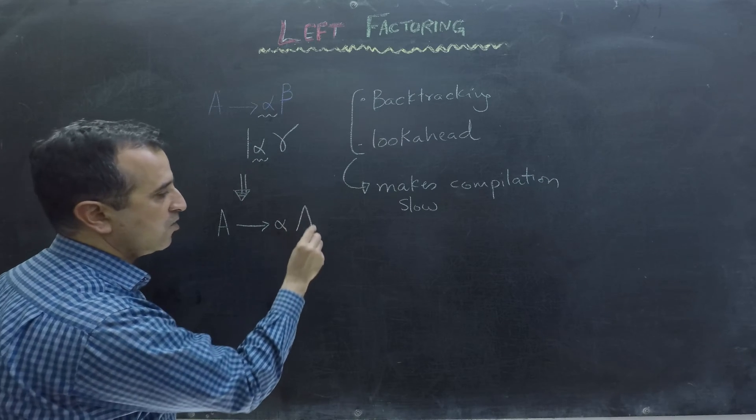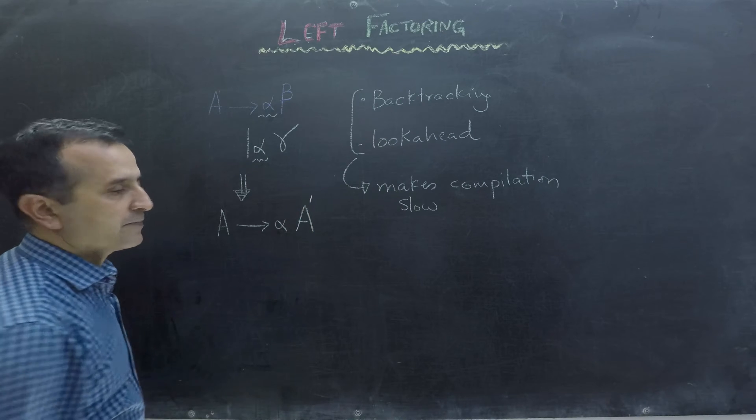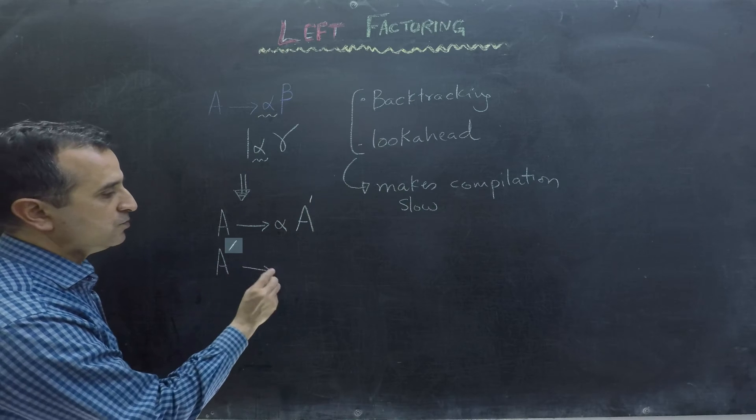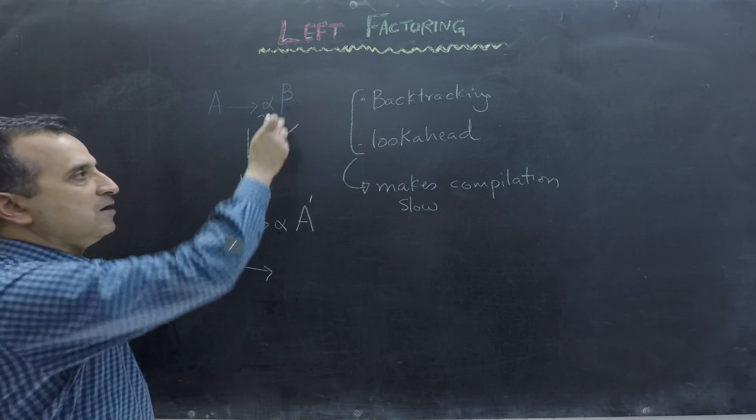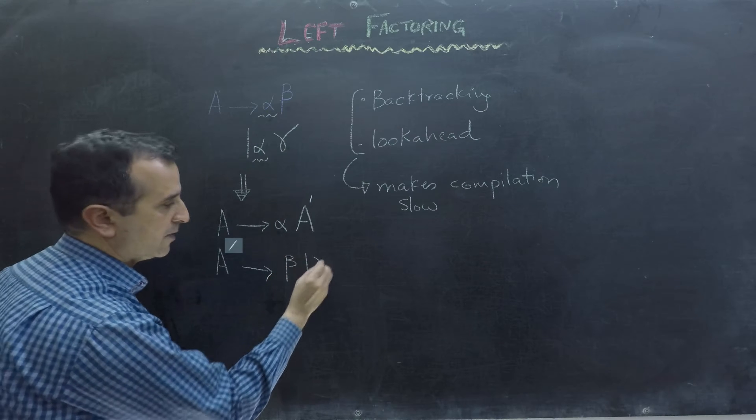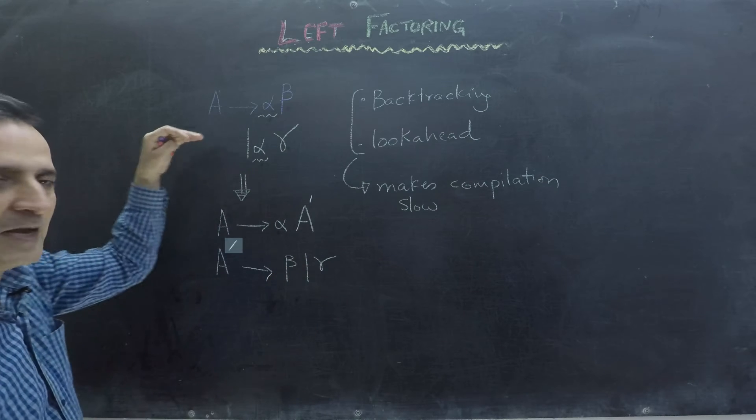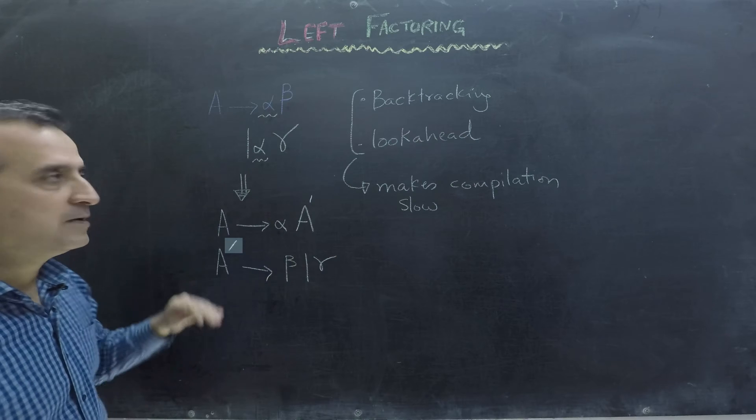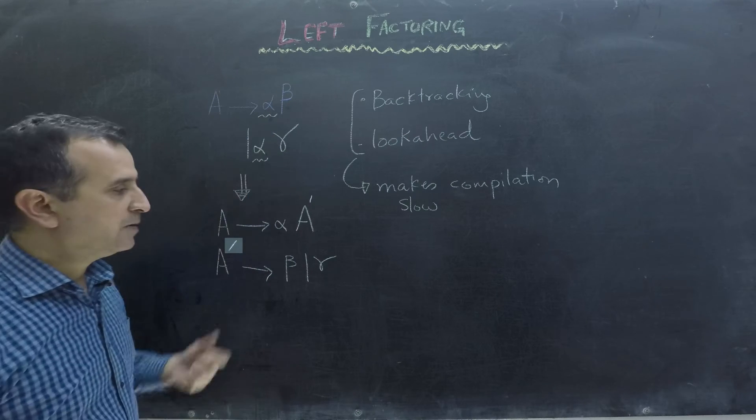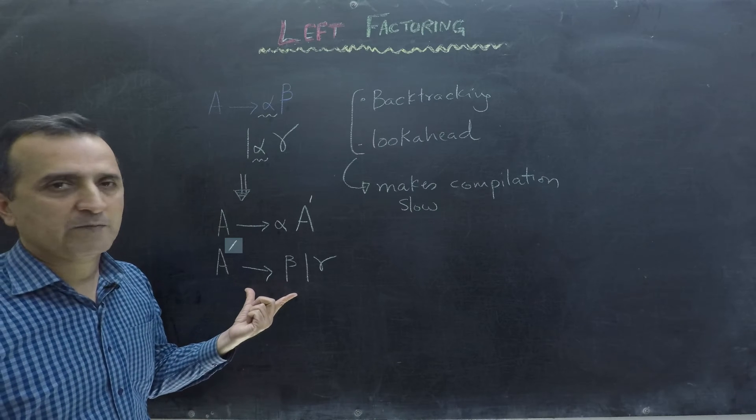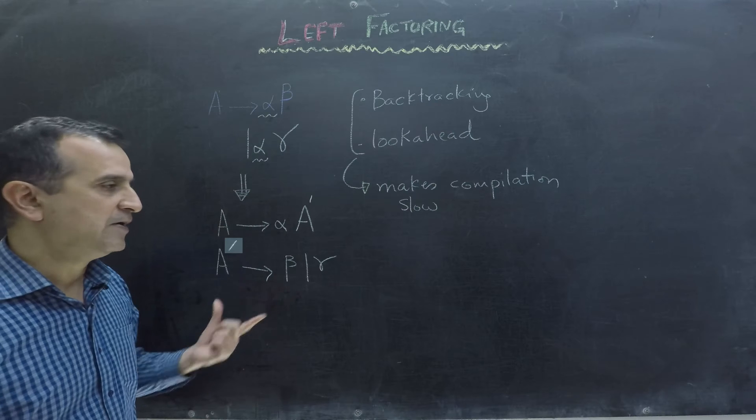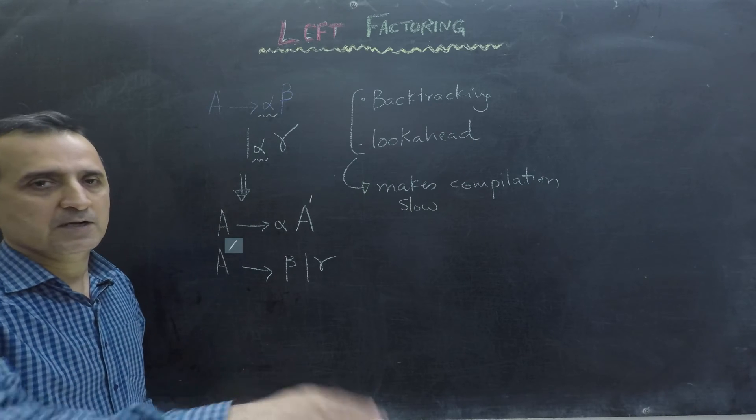And then A prime goes to either beta or gamma. So both of those context-free grammars are exactly the same, but here we have common prefixes and here we don't have any common prefixes. So in this case, the compiler will always have a single path to process to create a parse tree.